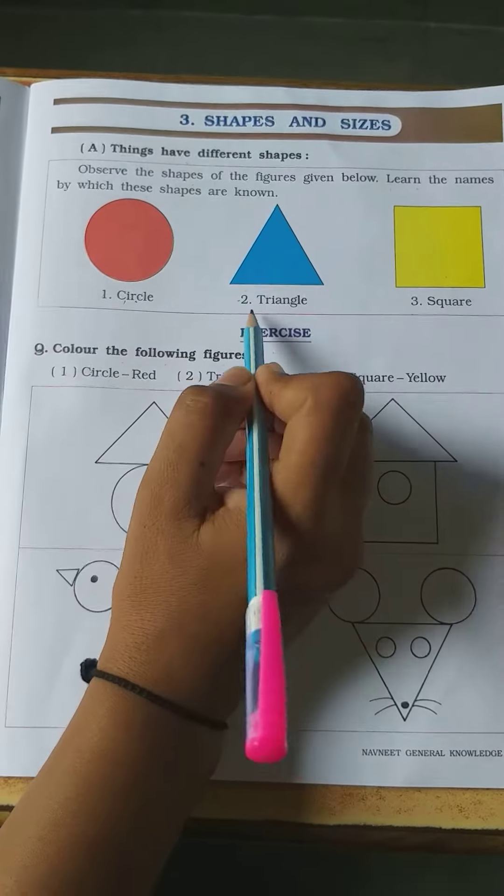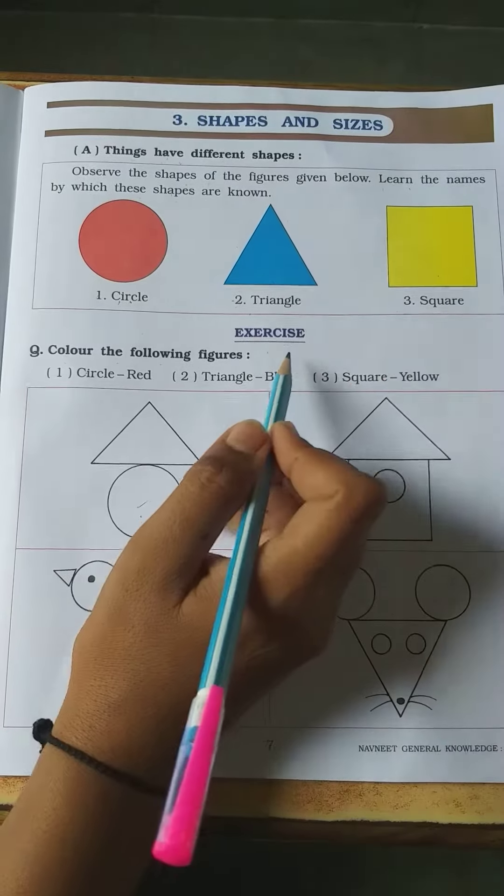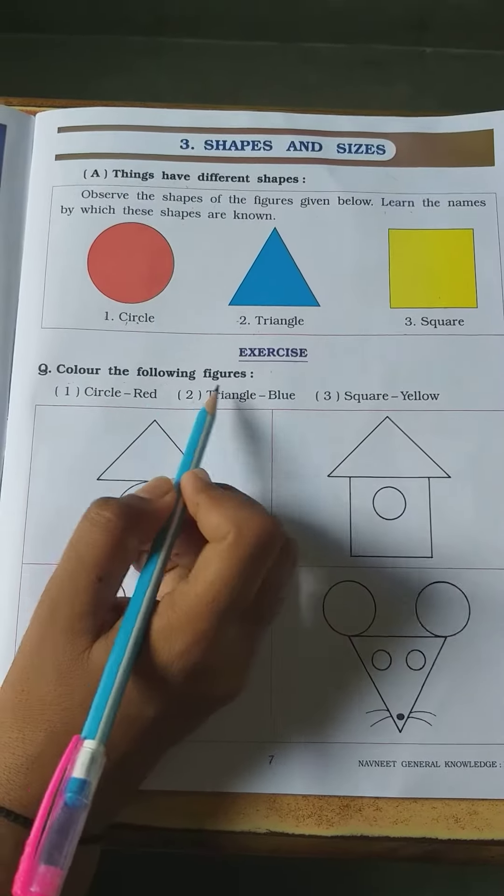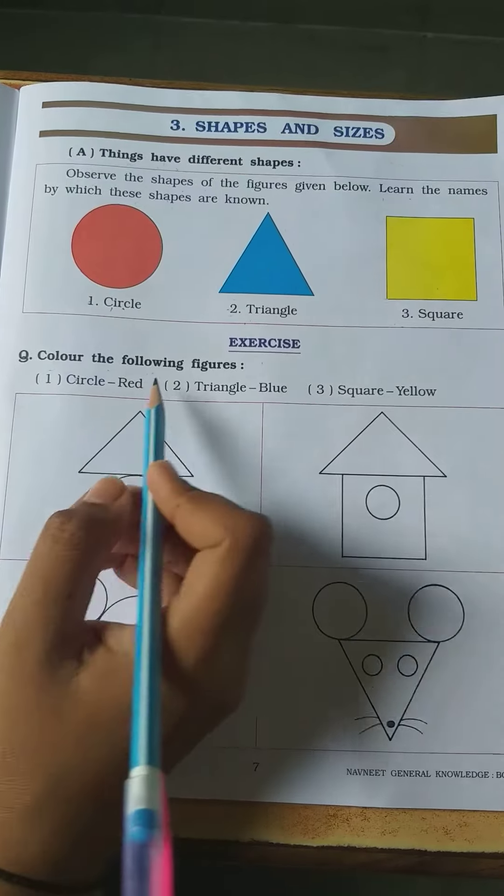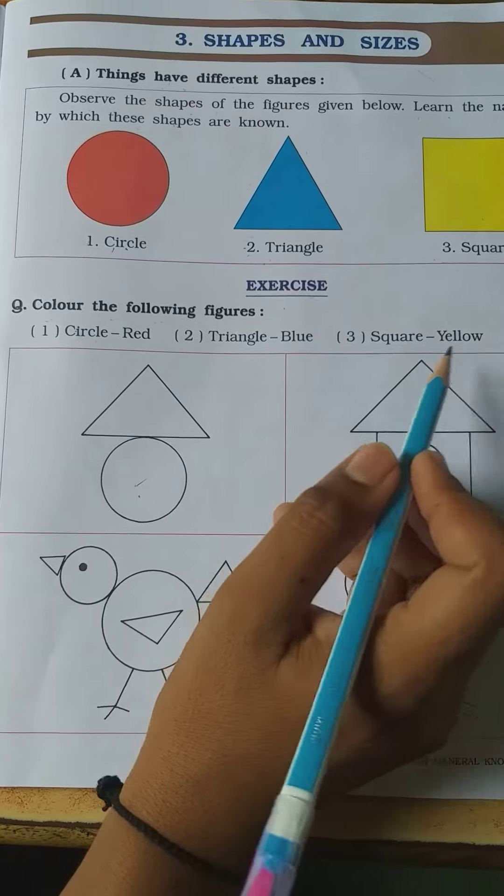Number 1 circle, number 2 triangle, number 3 square. Exercise: Colour the following figures. Here you have circle by red color, triangle by blue, and square by yellow color. You have to do home-based work.